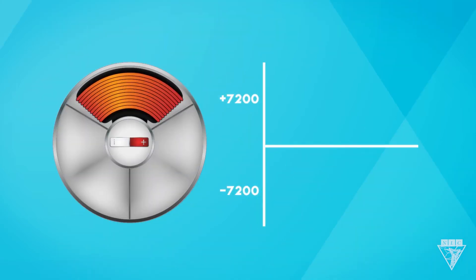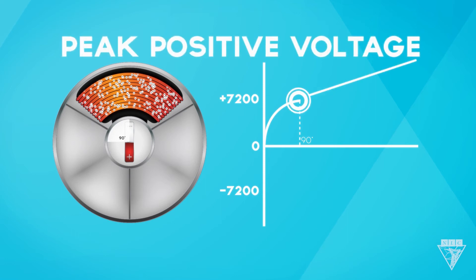But let's dissect it even further. If we start our generator with the coil between the positive and negative poles, nothing will be moving the electrons. So we'll have zero volts. But when the magnet rotates to 90 degrees, it's closest to the negative pole. And that's going to force the electrons away from the magnet at a maximum rate. This makes what we call a peak positive voltage.